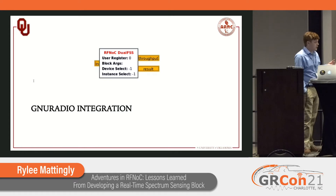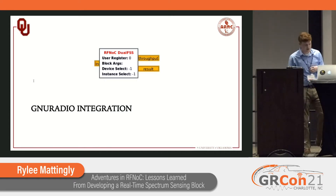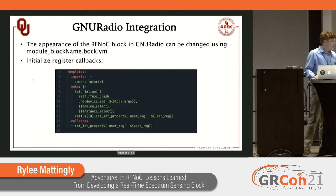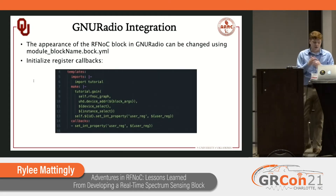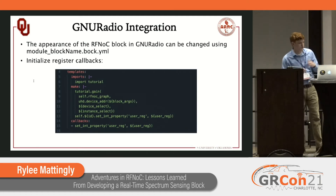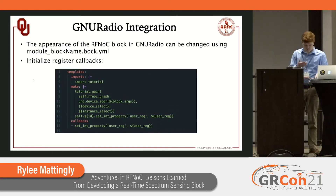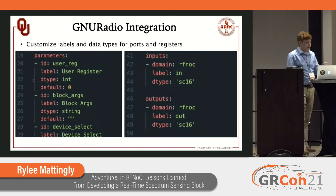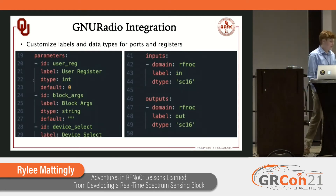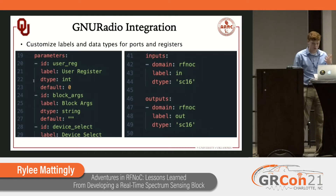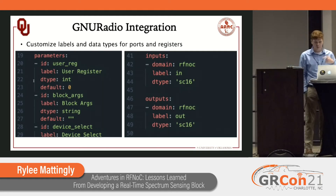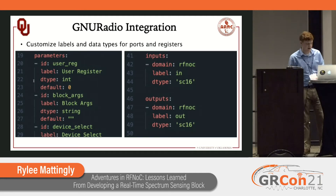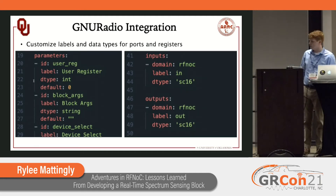Now we can look at the GNU Radio integration. This is where the block.yaml file comes in. In the top section, we want to install our register callbacks — there's some example in the default file that you can follow right along with. We can also customize the labels for each of our inputs and outputs, making them more helpful than just 'in0', 'in1', 'out0', 'out1'. For each of those inputs and outputs, the domain should be RF-NoC and the data type should be SC16.